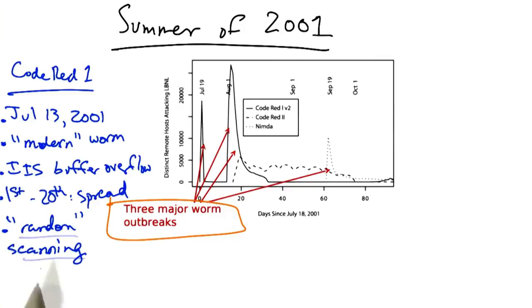After the scanning bug was fixed, the worm was able to compromise 350,000 vulnerable hosts in a matter of only 14 hours.